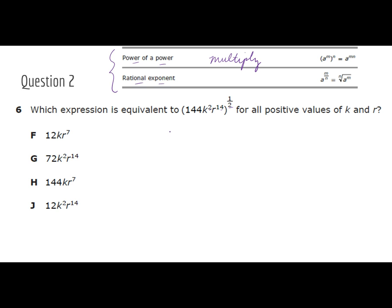So what we're going to do is we're going to split this up. I'm going to have 144 to the one half power. See how I had the 144 here and I'm going to give it the half power. Then I'm going to have K to the second to the one half power. And then I'm going to have R to the 14th to the one half power.